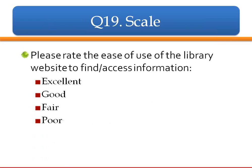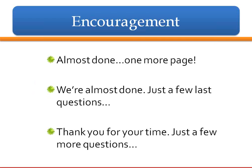'Please rate the ease of use of the library website to find information' — or to access information. Don't use both 'find and access' in the same question; that's a double-barreled question asking two different things. Use the excellent–good–fair–poor scale. Then, here's where you give encouragement — let them know they're almost done. You can say 'Almost done, one more page,' 'We're almost done, just a few last questions,' or 'Thank you for your time, we have just a few more questions.'